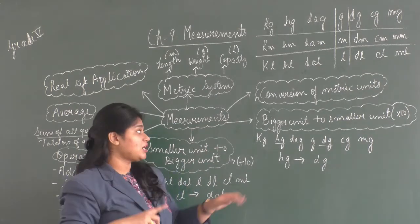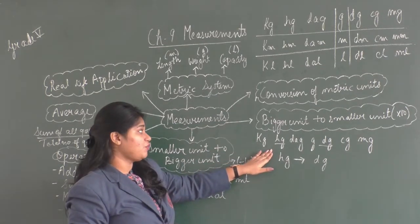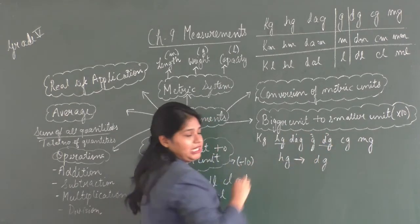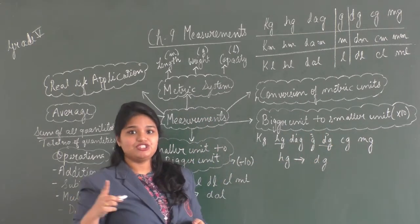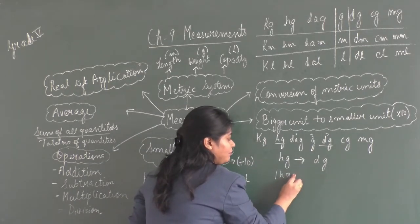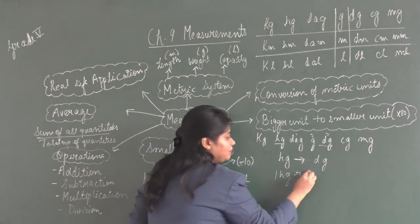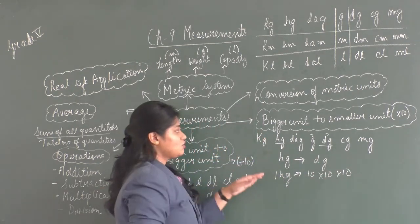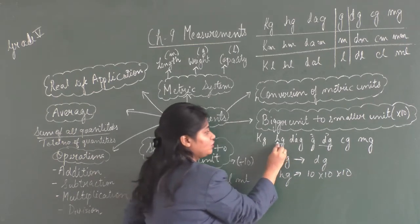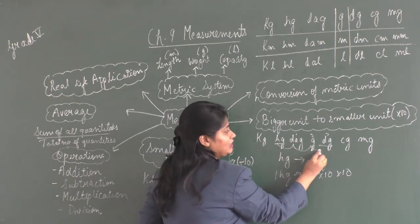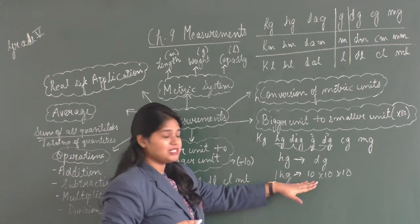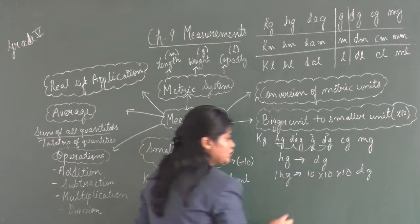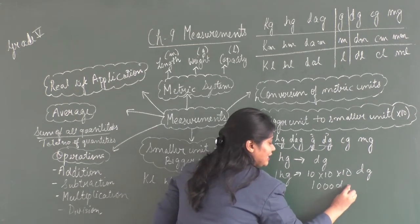Let's see how many jumps we need to take to reach from hectogram to decigram: 1, 2, 3 — so we are taking 3 jumps. That means 1 hectogram is equal to 10 multiplied 3 times. Going from hectogram to decagram, then gram, then decigram. So 1 hectogram equals 10 × 10 × 10 = 1000 decigram.